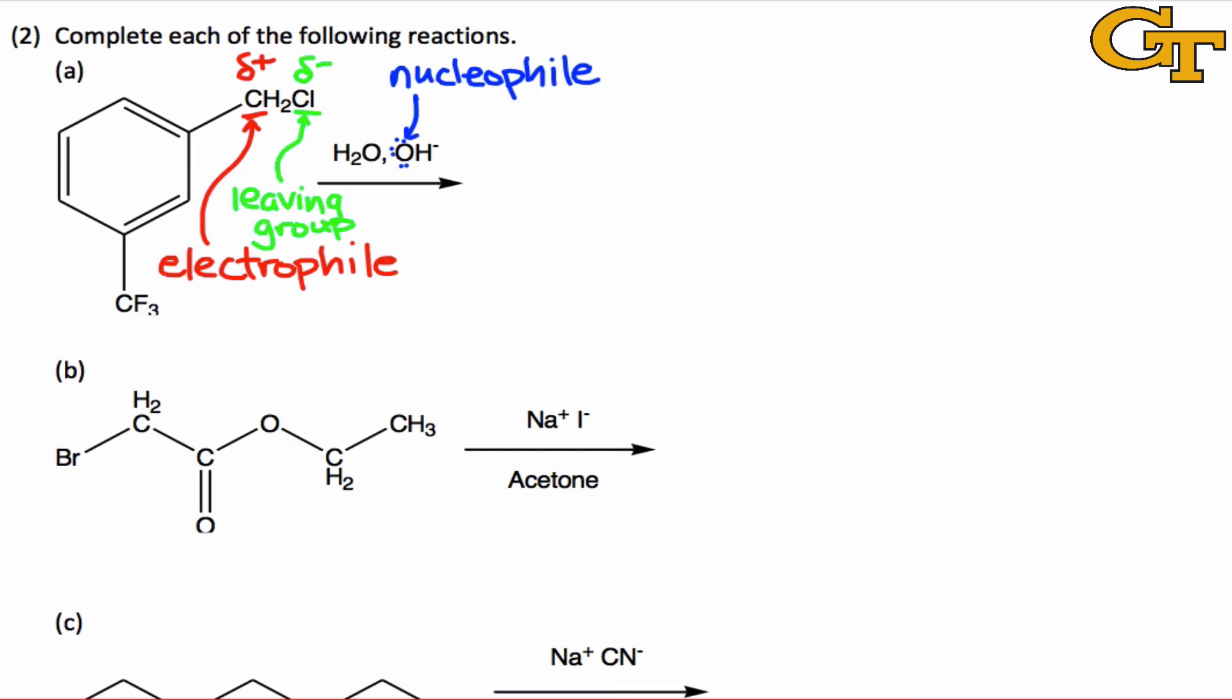Once we've identified these components, drawing the product is simply a matter of applying the general idea of an SN2 reaction, which involves a nucleophile attacking the electrophilic carbon and causing loss of the leaving group. So just to show in general what these curved arrows look like, a lone pair on the nucleophile forms a new bond to the electrophilic carbon, and the electrons in the carbon leaving group bond depart and head towards the leaving group. So as the products, we'll have the conjugate base of the leaving group, which in this case is chloride ion, will be one of the products. And now the electrophilic carbon will be bonded to a hydroxyl group. Since nothing else in the structure changes, I'm just going to abbreviate the benzene ring and the CF3 group as R.